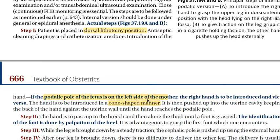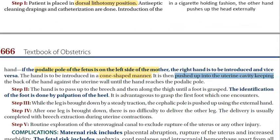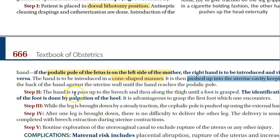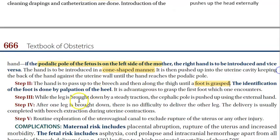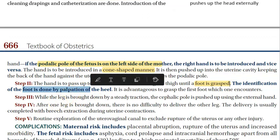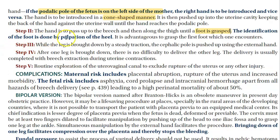The hand is pushed up into the uterine cavity, keeping the back of the hand against the uterine wall. You will pass up to the breech and along the thigh until the foot is grasped. You want to grasp the foot — it is the foot you want to pull, not the hand. Identification of the foot is done by palpation of the heel. You will feel the heel and then get the foot out.